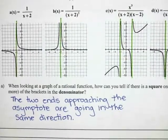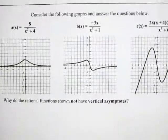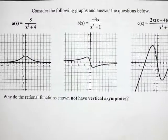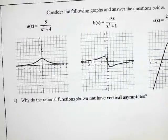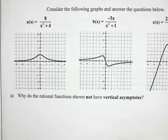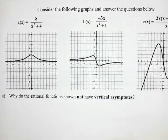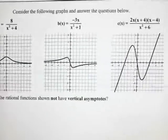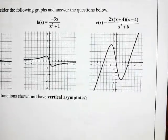All right, there is one more little part down here. It says consider the following graphs and answer the questions below. So my first one has 8 over x²+4, negative 3x over x²+1, and then 2x(x+4)(x-4), all divided by x²+6.